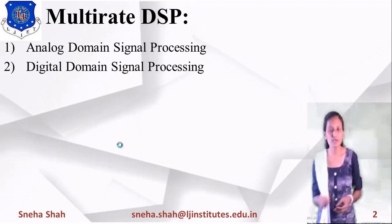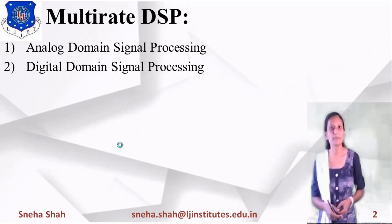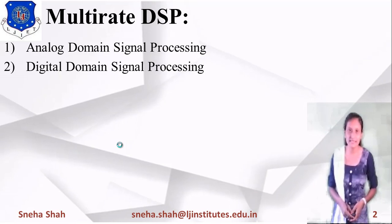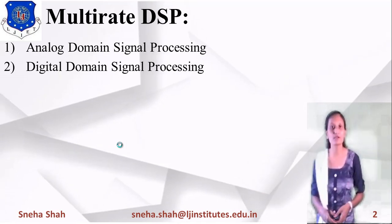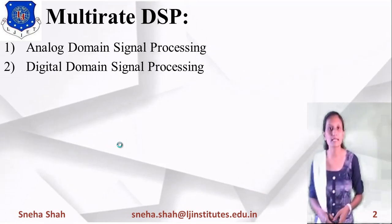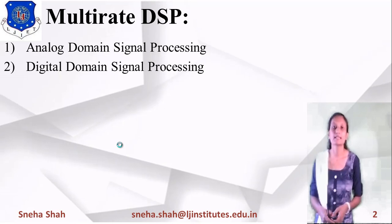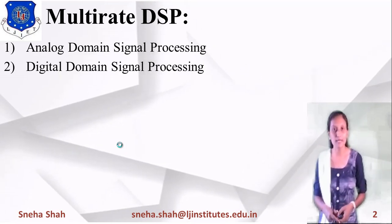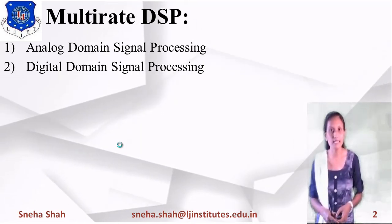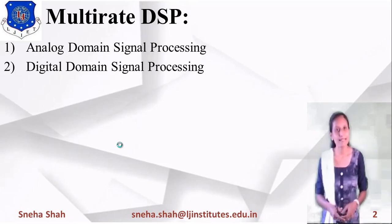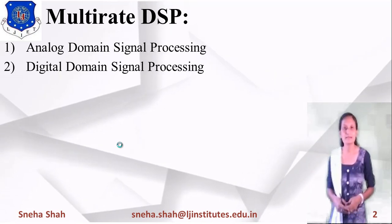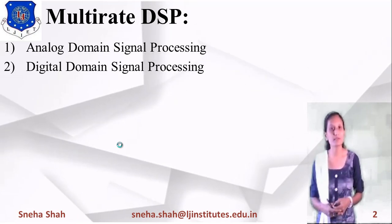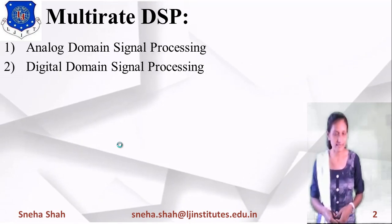But if we use more than one sampling rate — a different sampling rate at the transmitter side and a different sampling rate at the receiver side — then this kind of processing is considered multi-rate signal processing. So in any application that requires more than one sampling rate, we use multi-rate signal processing.